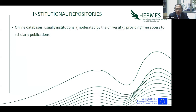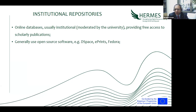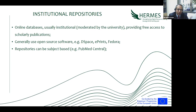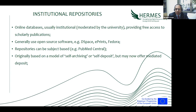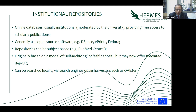An institutional repository is an online database, usually institutional — belonging to a university — providing free access to scholarly publications. It is a database made by the university to publish all its research in open access mode. They generally use open source software such as DSpace, ePrints, or Fedora. The repository can also be subject-specific, like PubMed Central — the most famous database for medicine. It is originally based on a model of self-archiving, where the author deposits their work. Research in the institutional repository can be searched locally via search engines or harvesters such as Oyster.